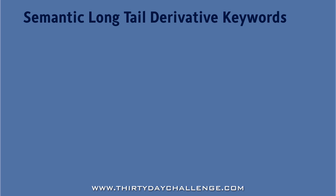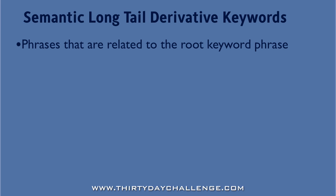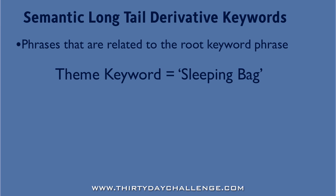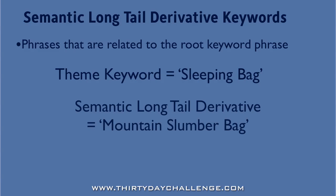Semantic Long Tail Derivative Keywords are phrases that do not contain the root keyword phrase exactly, but are still semantically related. So with the sleeping bag example, a Semantic Long Tail Derivative Keyword might be 'Mountain Slumber Bag'. In this example, the initial keyword phrase 'sleeping bag' is not actually part of the Long Tail keyword phrase, but Google still sees them as being related.